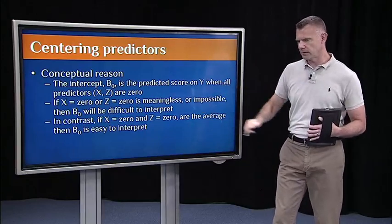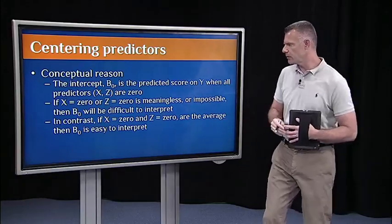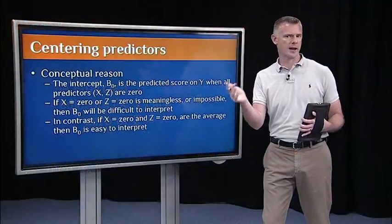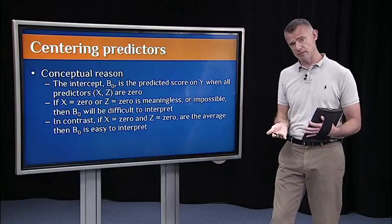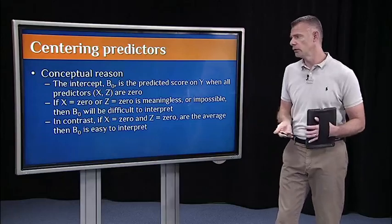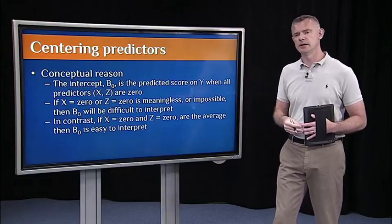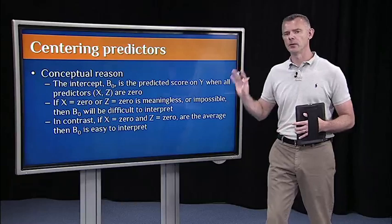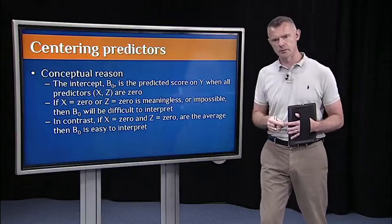That's been the case in a lot of the examples I've shown you in multiple regression. We've had regression constants that didn't make any sense, sort of off the charts, that didn't show up on our scatter plots, because we haven't centered our predictors. When we center the predictor, if X is 0 and Z is 0, well, 0 is now the average. So B₀, our regression constant, is the predicted score on Y for a child of average age who has a mom with an average vocabulary. Now that's a meaningful value.